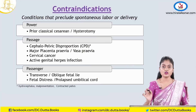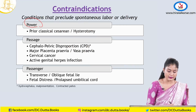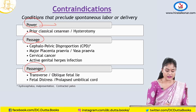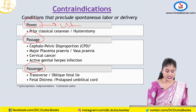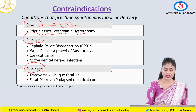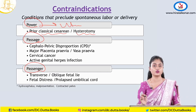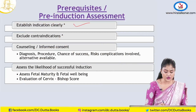Coming to contraindications, you can remember these as power, passage, and passenger. The power means the uterus. If there is a classical caesarean section or a hysterotomy, then you would not allow her to have a vaginal delivery — you do not induce labor in that case.